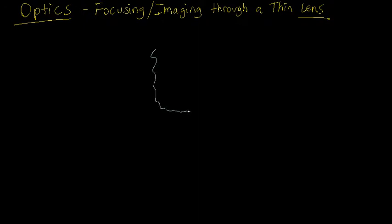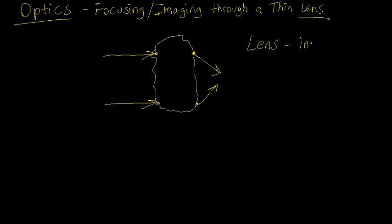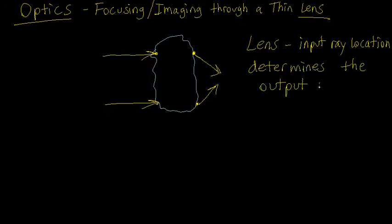If I have some object out here and I tell you that it's a lens, what does that actually mean? If I have different rays coming into different positions on this lens, what it means to be a lens is whatever position you're at will translate to the output ray having a different angle. The new angle it picks up is dependent on where the ray hit the lens. So essentially, for a lens, the input ray location determines the output ray angle.